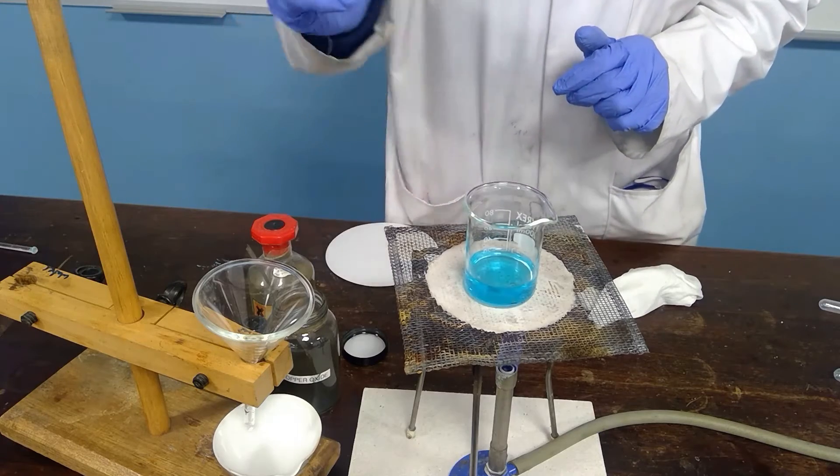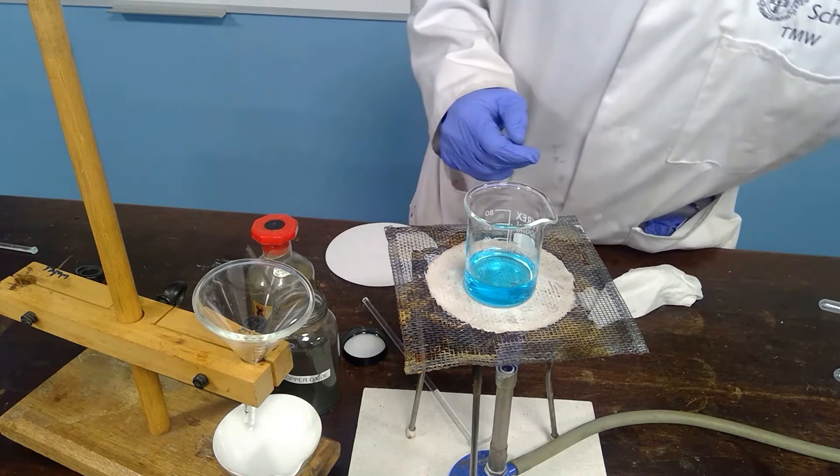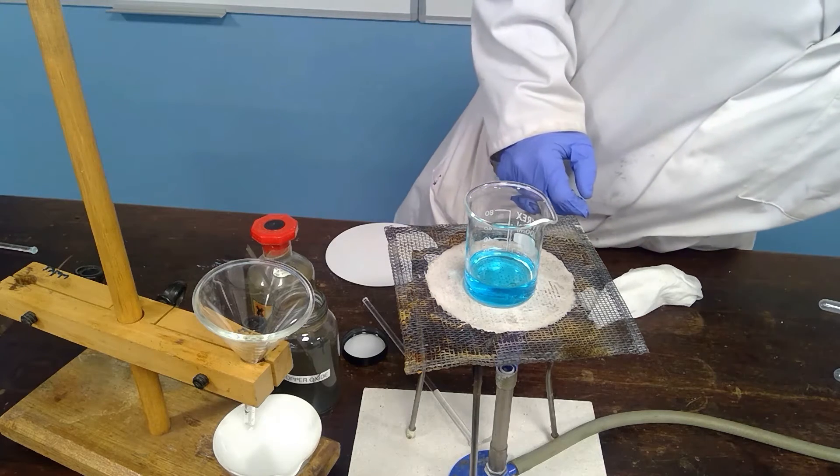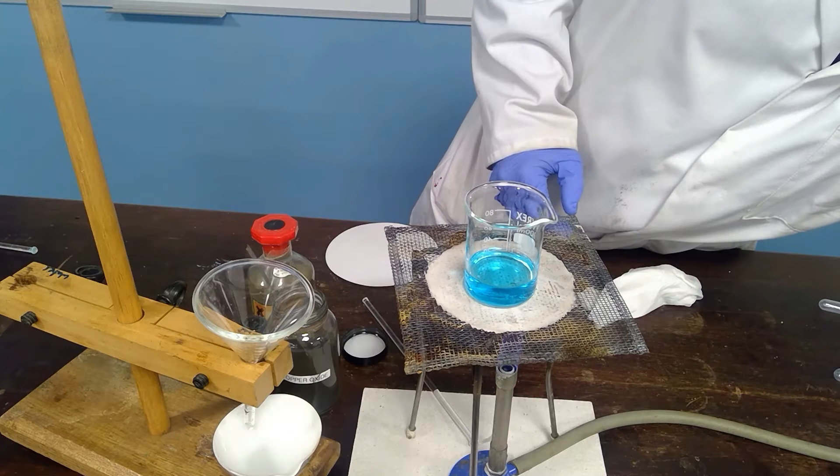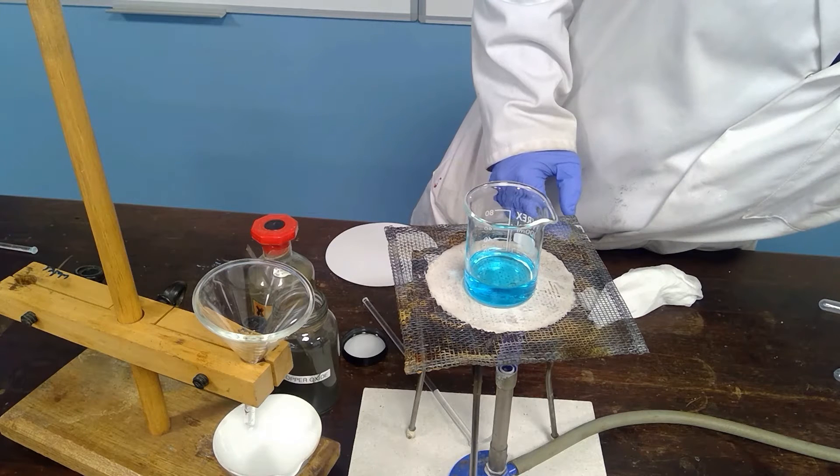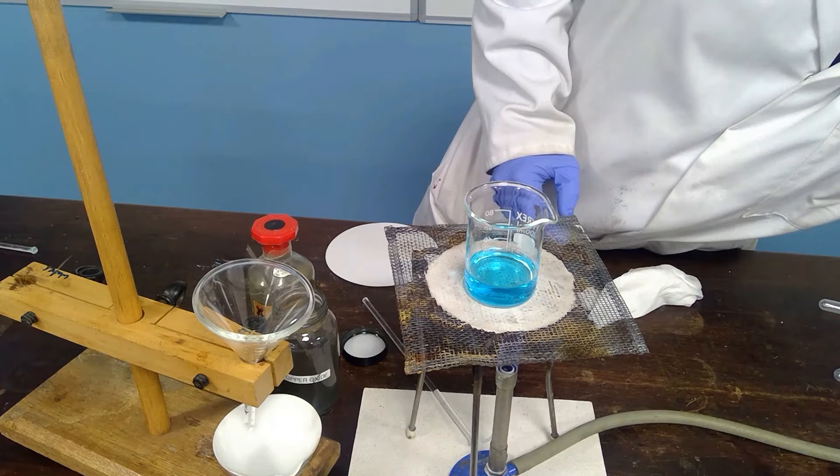Now at this point we have the sulfuric acid at a good temperature for the reaction so the Bunsen can be turned down and more copper oxide can be added.